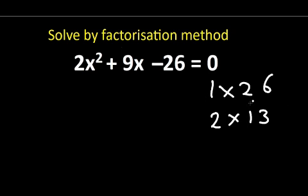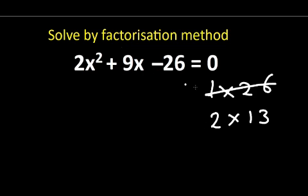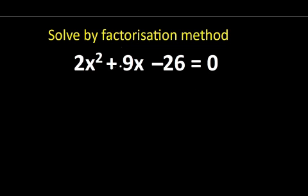So these are the possible factors of 26. Now let's check if these factors will add up or be subtracted to give us 9. So 26 minus 1 is 25, and 26 plus 1 is 27 — this is not going to work. Next, 2 plus 13 is 15, and 13 minus 2 is 11. So this does not give us 9. You might be tempted to conclude that this problem cannot be solved by factorization method.